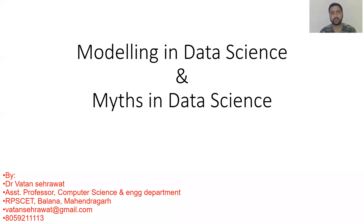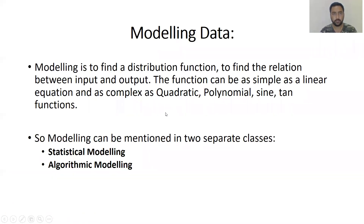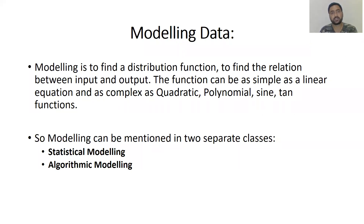We are discussing modeling in data science. Modeling is just finding a particular distribution function — it can be a linear function or a more complex function such as quadratic, polynomial, or sine functions.